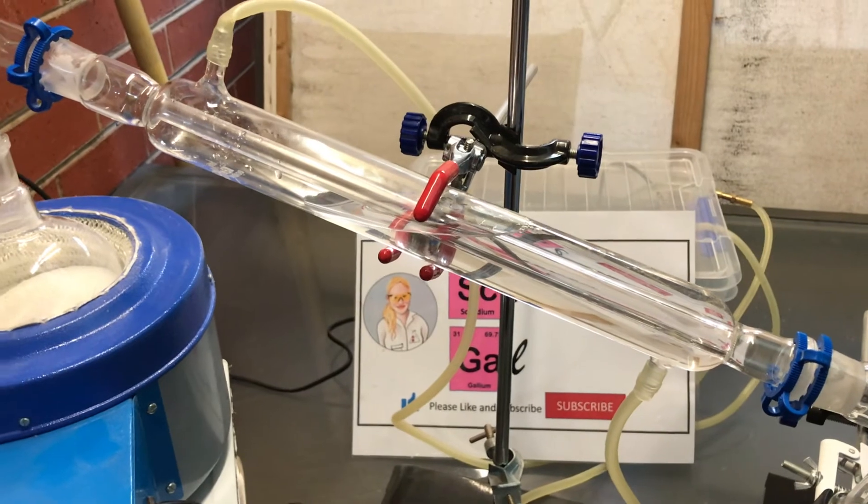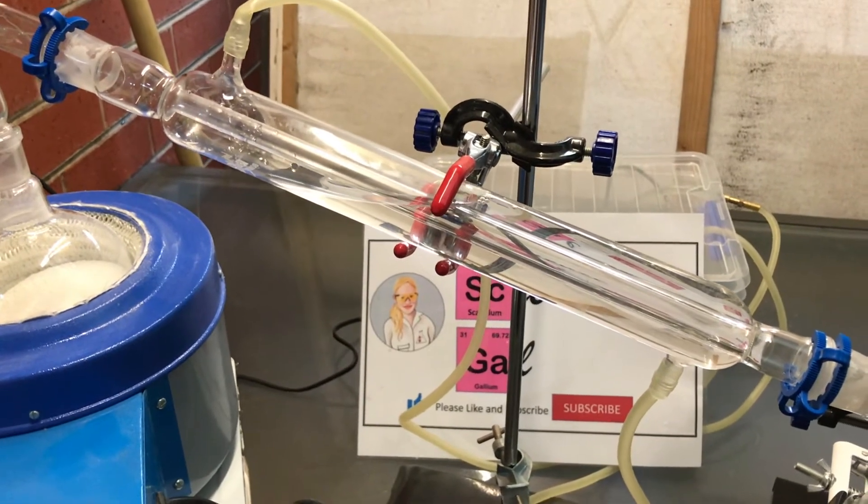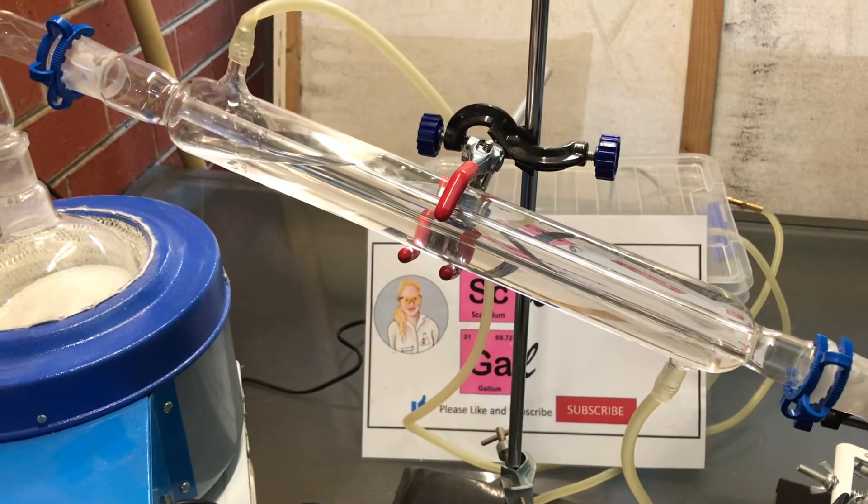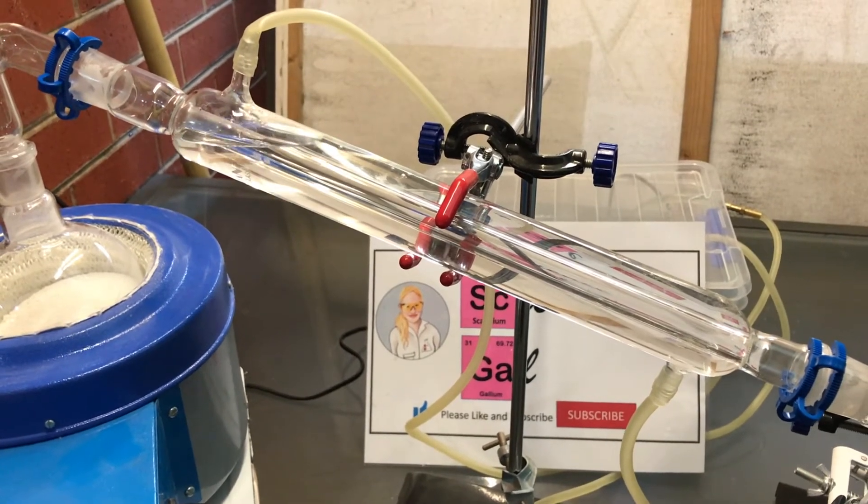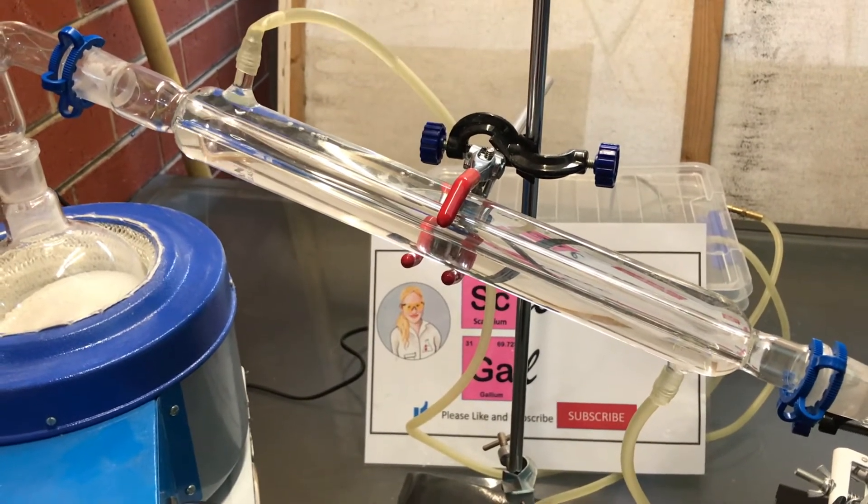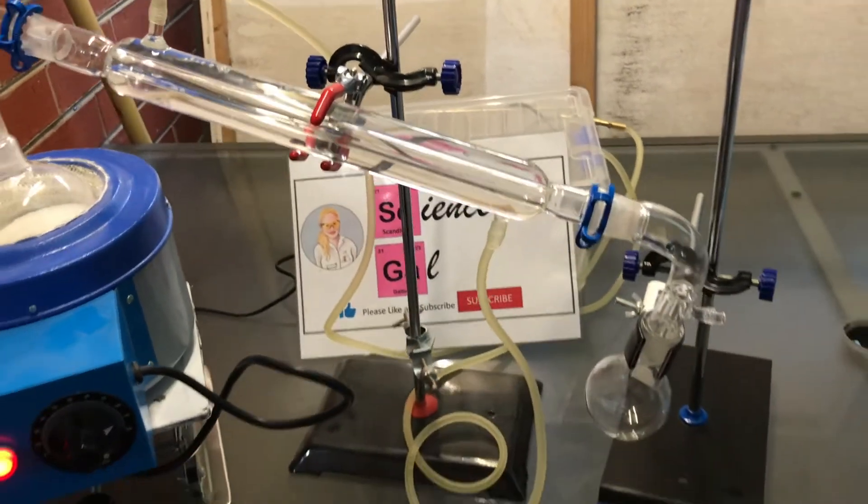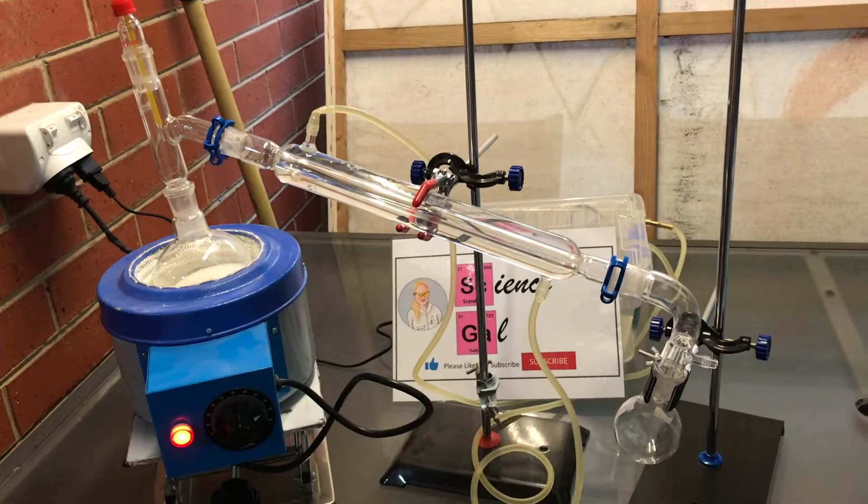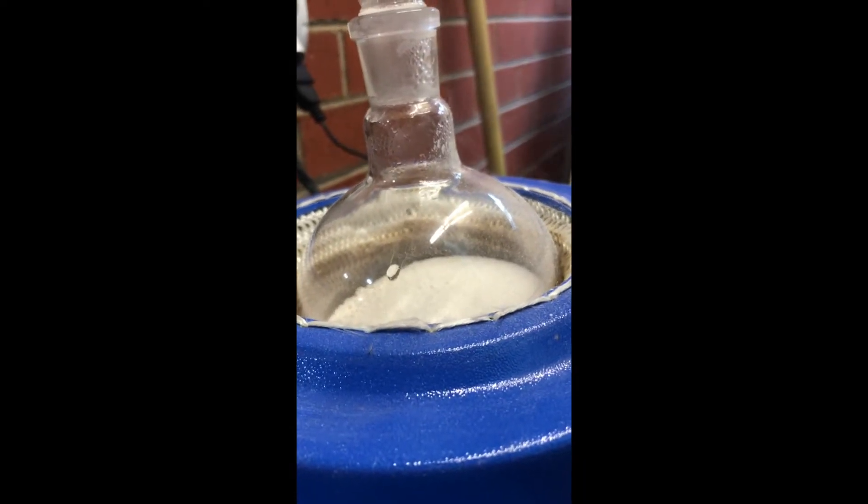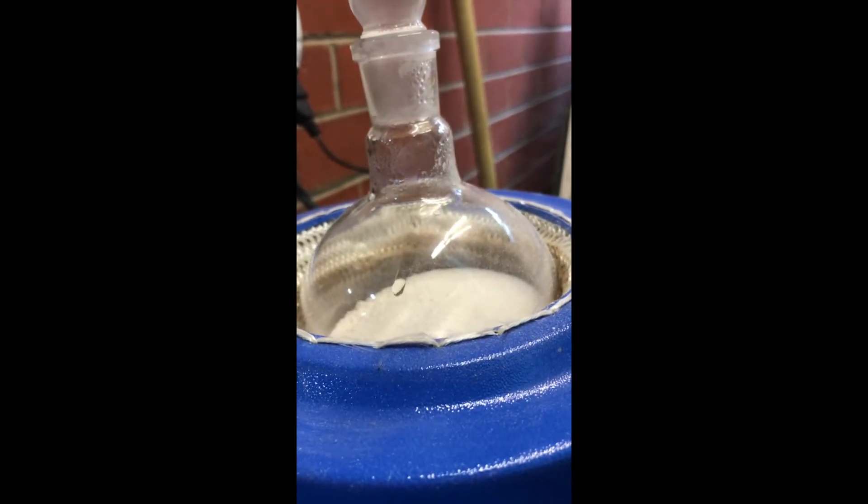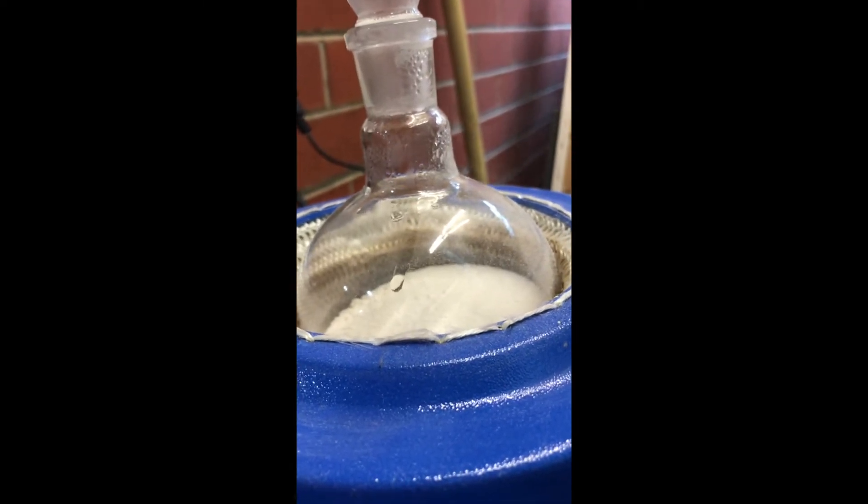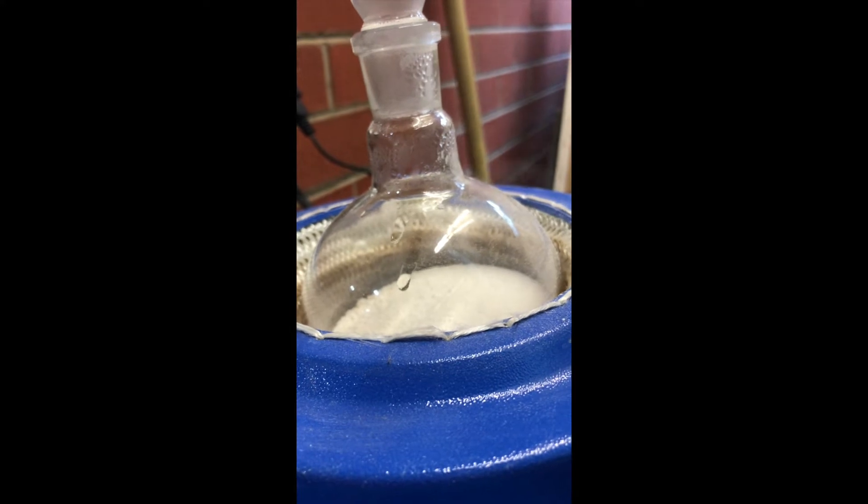As you can see, the water goes from the bottom of the condenser to the top. After turning the heating mantle on, shortly afterwards there started to be condensation on the flask. This indicates that the calcium acetate is more hydrous than I would want it to be, and I probably could have left it in the oven a little longer.